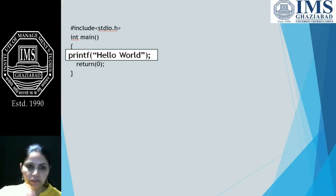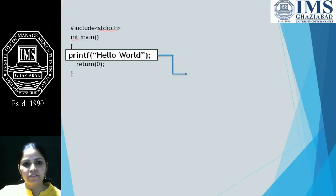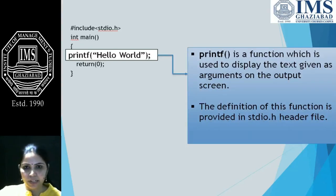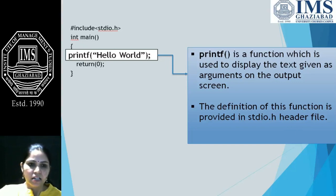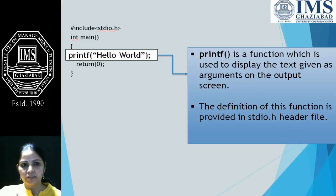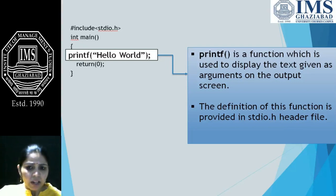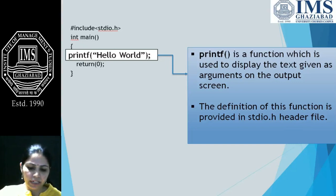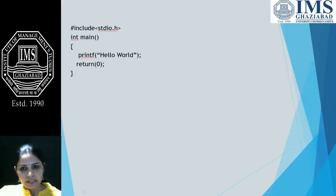Here we have printf 'Hello World'. Printf is a built-in function whose definition is mentioned in stdio.h, and this function is used to display text with the given arguments. We have written 'Hello World' in double quotes, which means we have written a string, and this string would be displayed as-is on the output screen. The definition of this function is provided in the stdio.h header file.